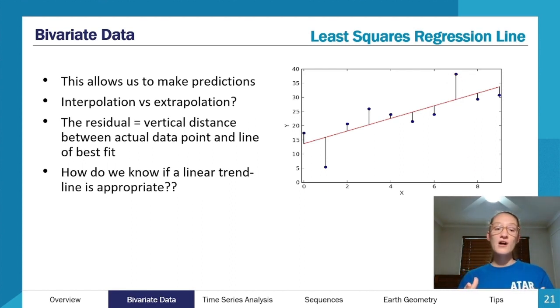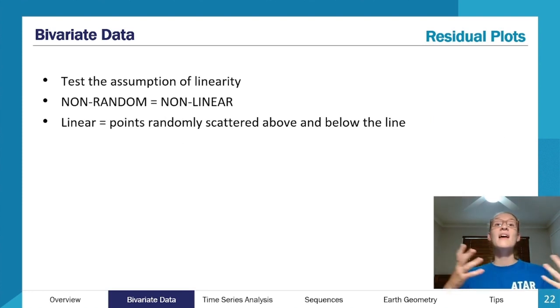Linking it back in again to what we were saying earlier about our r value, with our r value we were saying that it's only appropriate to use a Pearson's correlation coefficient if it's linear, but it's also only appropriate to use a linear trend line if it's got a linear relationship present. So how do we know if a linear relationship is present? As I alluded to earlier, it is with residual plots.